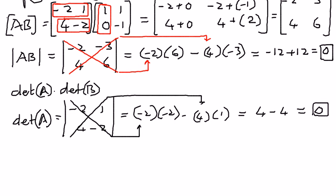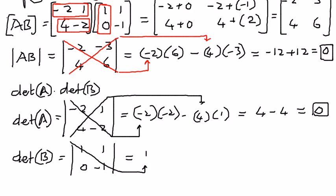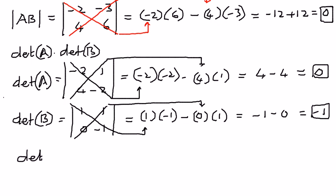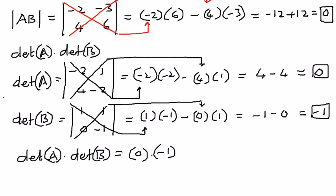Next, we find the determinant of B. Matrix B has elements 1, 1, 0, negative 1. We multiply the major diagonal elements: 1 times negative 1, minus the minor diagonal product: 0 times 1. Simplifying: 1 times negative 1 is negative 1, and 0 times 1 is 0, so the determinant of B equals negative 1. Therefore, determinant of A times determinant of B is 0 times negative 1, which equals 0.